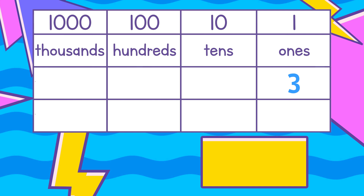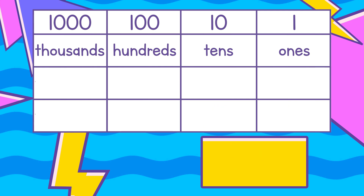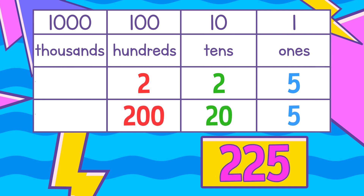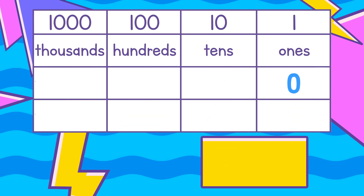Now I'll say some digits and put them in a position on the place value chart. You tell me what the number's worth. A 3 in the ones place, a 5 in the tens place, is worth... A 5 in the ones place, a 2 in the tens place, a 2 in the hundreds place, is worth... A 0 in the ones place, a 0 in the tens place, a 0 in the hundreds place, a 1 in the thousands place, is worth...